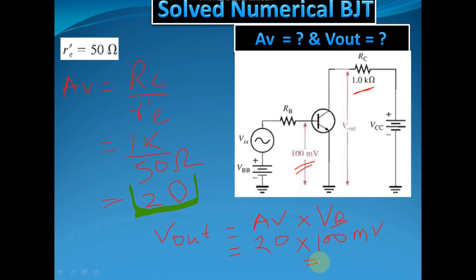If you solve this, you will get 2 volt RMS. So what is the output of your amplifier? That is 2 volt RMS. And what is the voltage gain of your amplifier? That is 20.